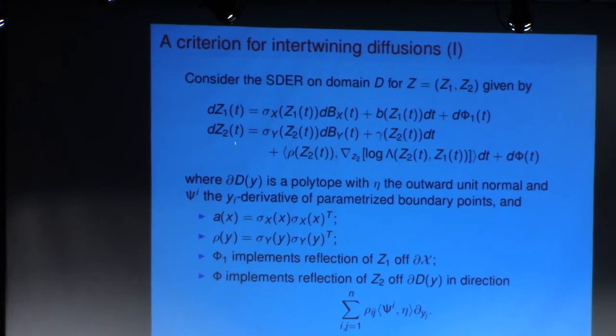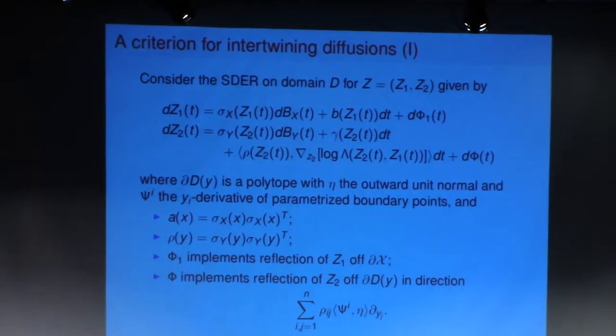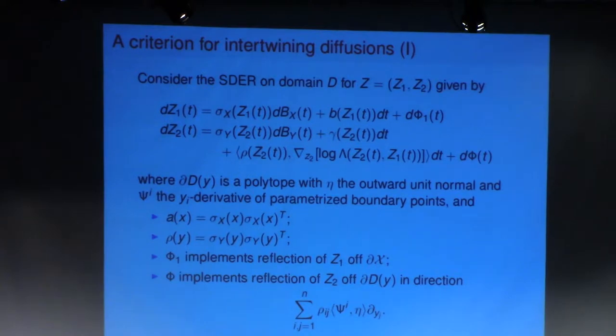First, for Z1, the equation is just simply the exact same as the condition, as the equation for X. And that corresponds to the fact that X and Z1 should evolve in the same way.